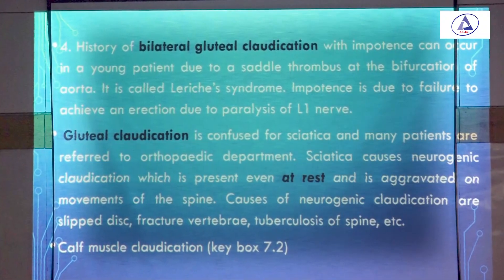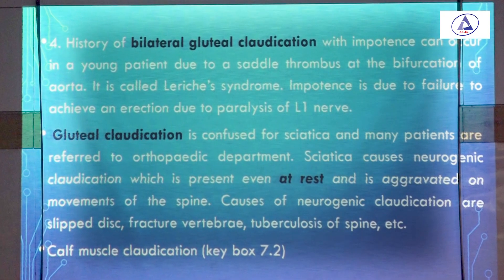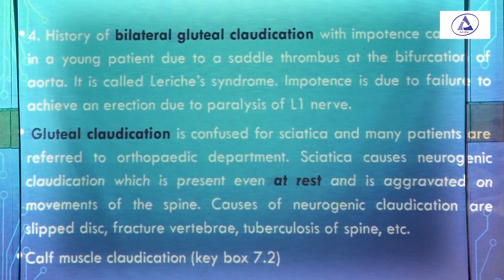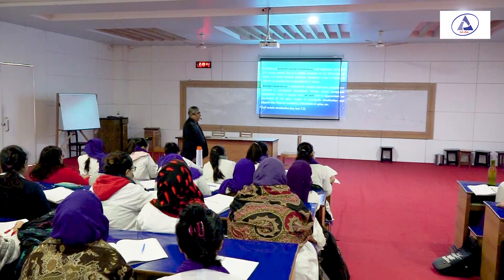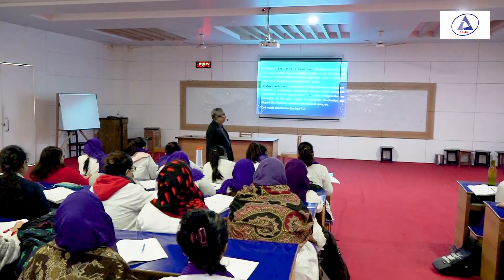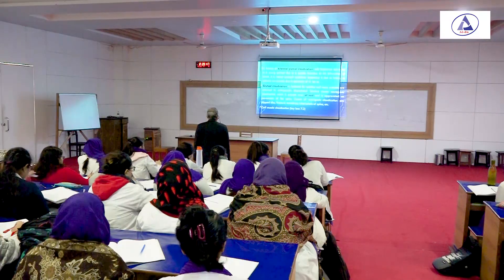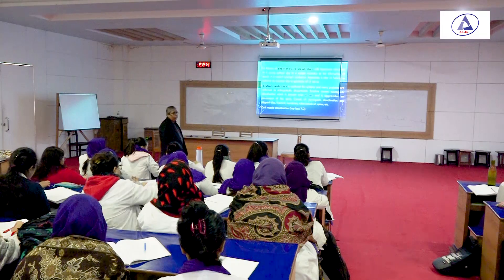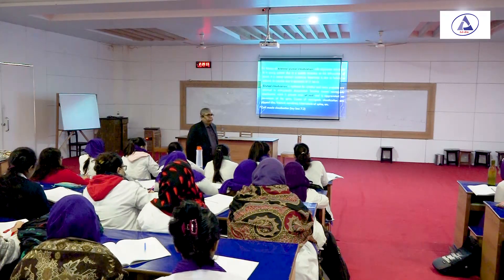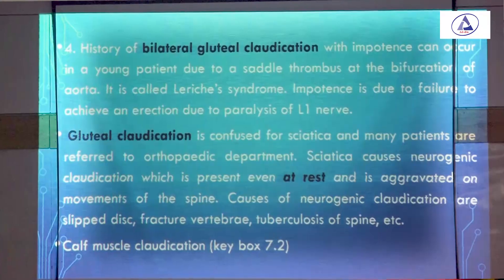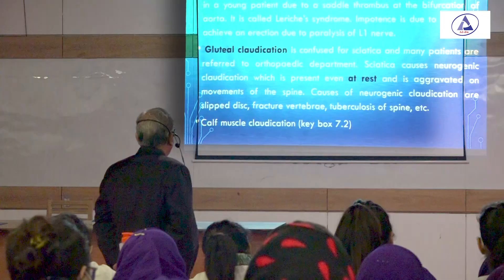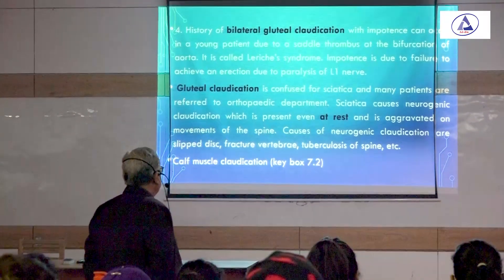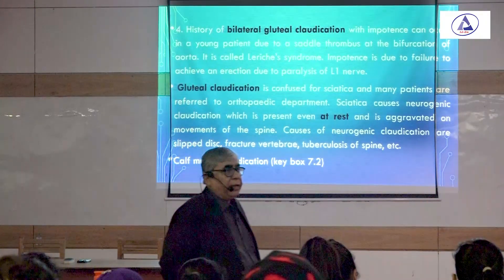Bilateral gluteal claudication can occur in young patients due to a saddle-shaped thrombus at the bifurcation of the aorta. This involves the gluteal region and hip, and is called Leriche syndrome. It is important because it causes failure to achieve an erection due to paralysis of the L1 nerve, and such patients may complain of sudden erectile dysfunction.